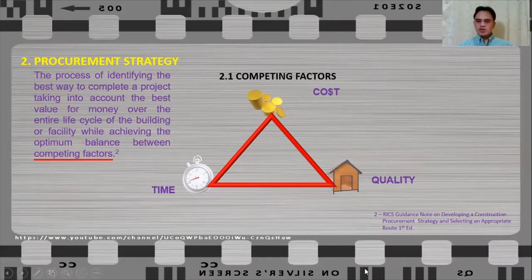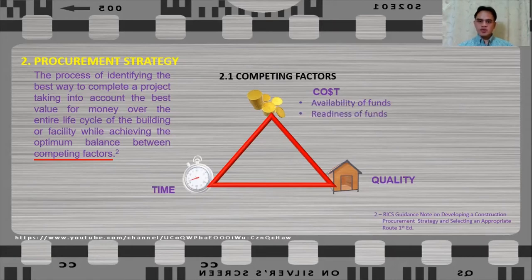When we analyze the factors that will affect cost, we don't only take a look at the total cost of the project, but we have also to take a look at whether the funds are available or when will the funds be available. Does the capital cost strike a balance with an operational cost or will the capital cost be the primary factor to the organization? So these are only a few things that we have to consider when we analyze the cost as a competing factor.